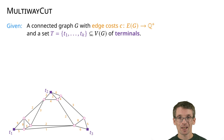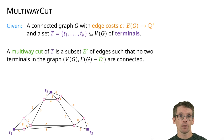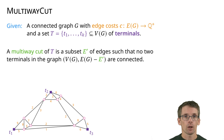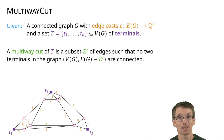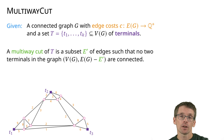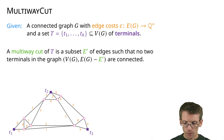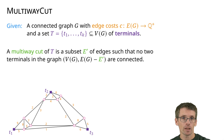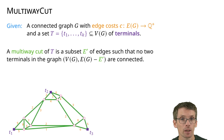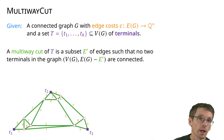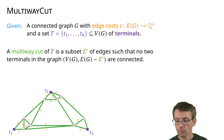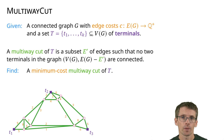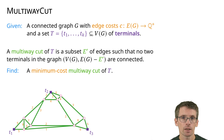A multi-way cut is a subset of edges such that no two terminals are connected in the graph after removing those edges. We want to find the set of edges to remove so that the terminals are not in the same connected components. Without further requirements we could take all edges, but what we want is a min-cost — min sum of costs — multi-way cut.